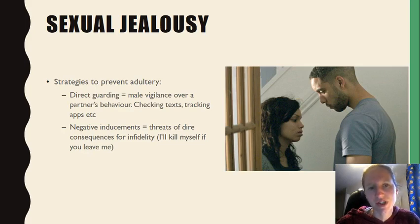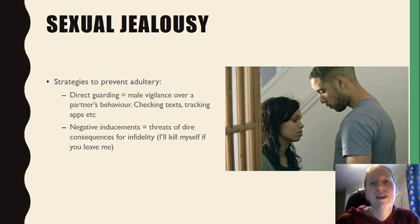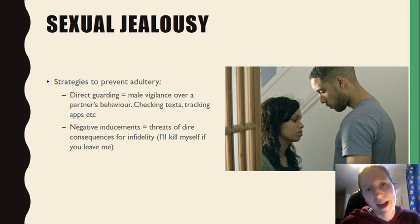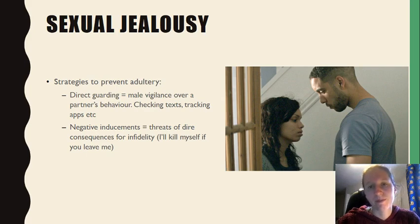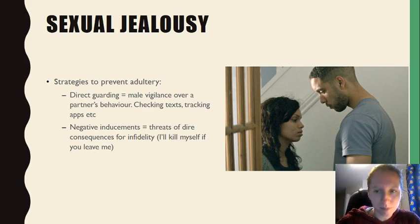One of those strategies is direct guarding — keeping tabs on a partner's behaviour, wanting to know where they're going, who they're with, checking their texts. Another strategy is negative inducements: threats of really bad consequences that they'll carry out if their partner is unfaithful and sleeps with someone else. Those can be very dire consequences.